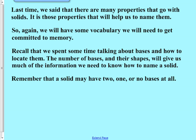Now last time we said that there were many properties to go along with solids. And we said since the solids do vary somewhat, it's difficult to come up with terms that are specific to all solids. But the naming system is pretty uniform. So the properties that we can find about the solids are going to be what we're going to need in order to be able to name them. So again, we're going to have some vocabulary that we're going to need to get committed to memory. If you have not yet learned the vocabulary from yesterday, then that is going to need to be a priority.